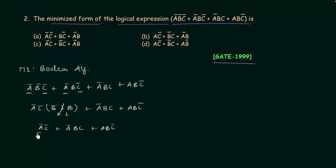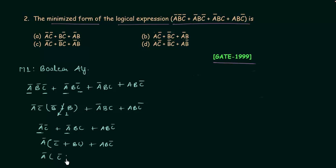From the first two terms A'C' and A'BC, we take A' common using the distributive law. In the bracket we have C' or BC. By the distributive law, C' or BC equals C' or B. So we now have A'(C' or B) or ABC', which gives A'C' or A'B or ABC'.